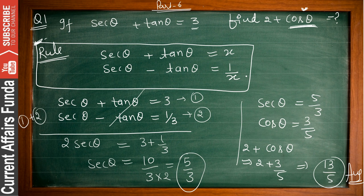Remember, sec θ + tan θ is equal to x, so sec θ − tan θ is equal to 1/x. We apply this equation: we have 3 and 1/3. We add the equations so that tan cancels out. 2 sec θ = 3 + 1/3, so sec θ = 5/3. Then 2 + cos θ = 2 + 3/5 = 13/5. This is our answer.